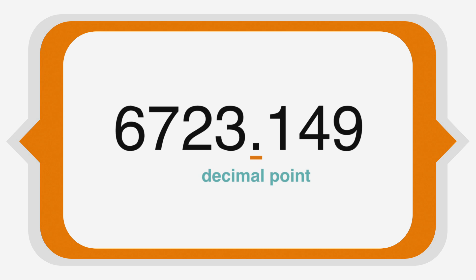Next is the decimal point, indicating we are moving from the fractional part of the number to the whole part of the number. 3 is in the ones place, 2 is in the tens place, 7 is in the hundreds place, finally 6 is in the thousands place.